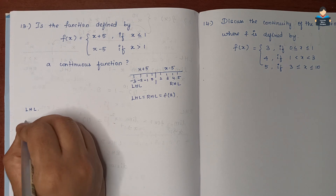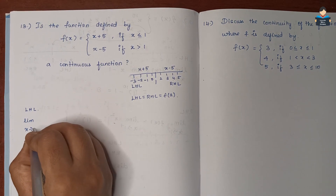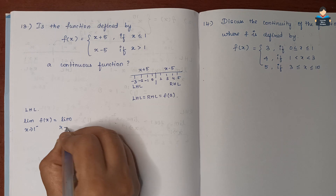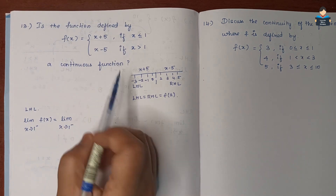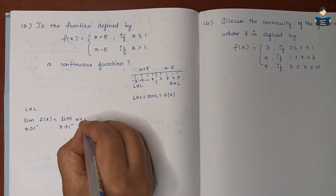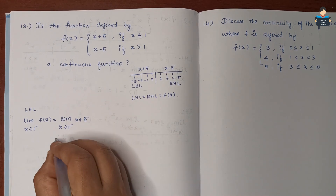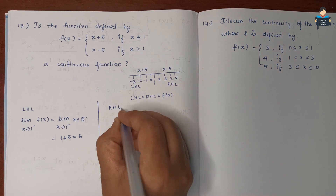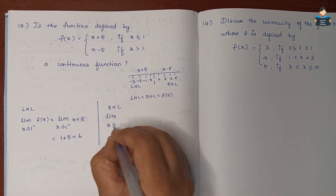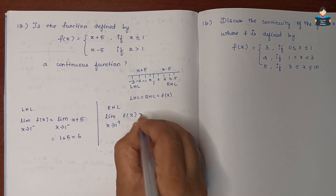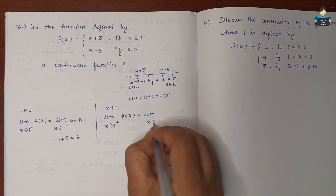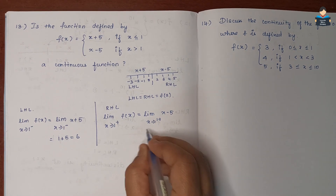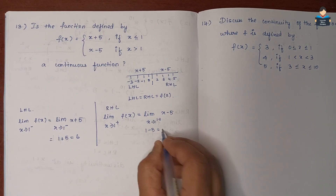For LHL: limit x tends to 1 minus of f(x) — since x is approaching 1 from the left, we use x + 5, so substituting x = 1 gives 1 + 5 = 6. For RHL: limit x tends to 1 plus of f(x) — we use x - 5, so substituting x = 1 gives 1 - 5 = -4.